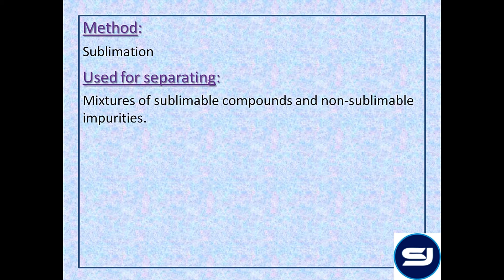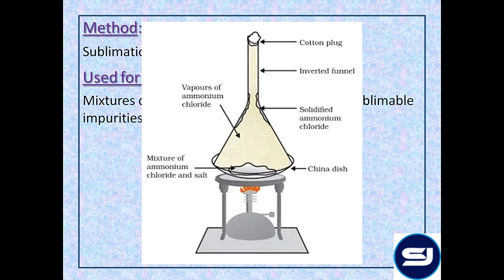If these sublimable compounds contain impurities which are non-sublimable, then this method can be used for purification. Hence, sublimation technique is used for separating mixtures of sublimable compounds and non-sublimable impurities. The mixture is heated — taking the example of ammonium chloride — and the same technique can be applied for organic compounds as well.